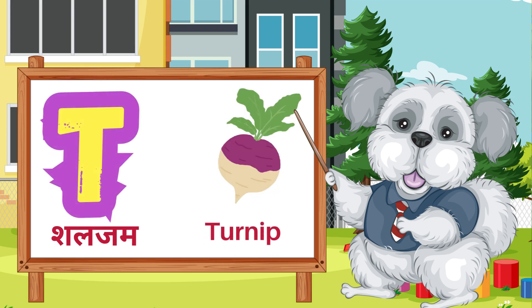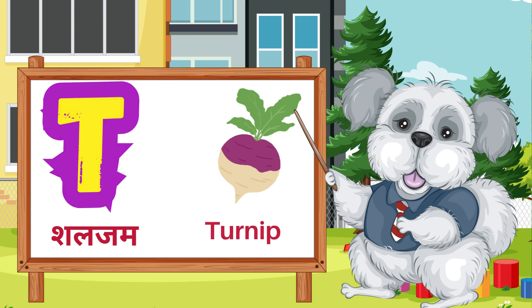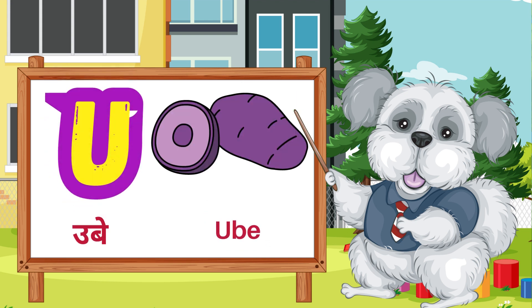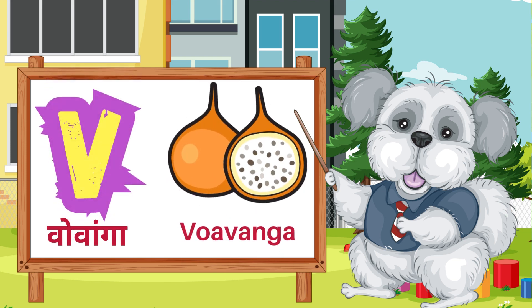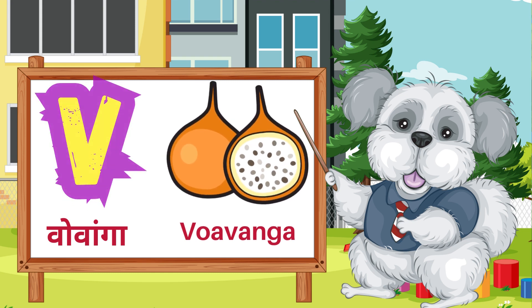T is for turnip. U is for ube. V is for vovanga.